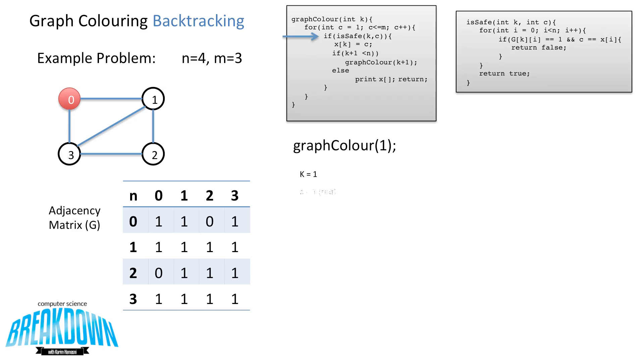So K is equal to 1. And C in the first iteration of this for loop is equal to 1. So we're going to attempt to see if we can color in node 1 as red. So we call isSafe. And in the very first iteration of isSafe, i is equal to 0. So now it's going to compare the colors between node 0 and node 1 if they are adjacent. So i is equal to 0. And now it tries G[K][i]. So G[K], which is G[1], and i, which is 0, gives us G[1][0]. So in the adjacency matrix, we can see that that is equal to 1. And then we check to see if C, the value we are trying to set, which is 1, is equal to X of i. So node 0, X of 0. And they are equal. So it returns false. Because now we know we cannot color node 1 as red, because an adjacent node to it, node 0, is already red.